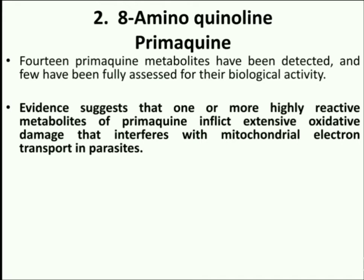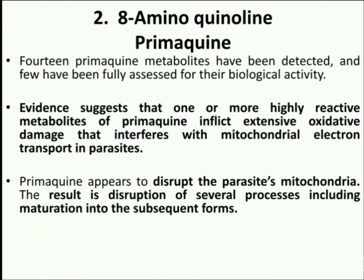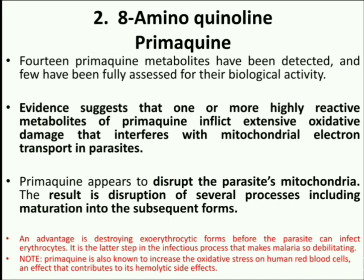Critical function of mitochondrial electron transport in blood stage Plasmodium falciparum is to support pyrimidine biosynthesis. It is believed that Primaquine disrupts the parasite's mitochondria, which results in disruption of several processes including maturation of the parasite in the subsequent forms. An advantage of destroying the exoerythrocytic forms of the parasite is that it cannot mature and thus remains unable to infect other erythrocytes. Note that Primaquine is also known to increase oxidative stress on human red blood cells, an effect that contributes to its various hemolytic side effects.